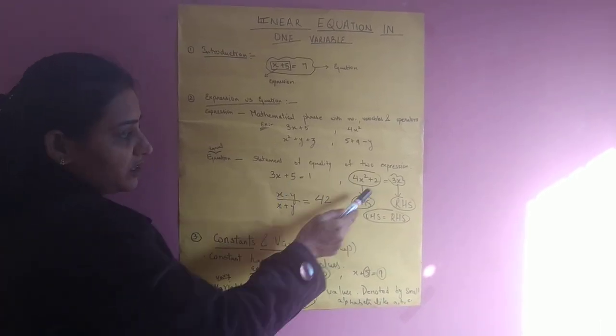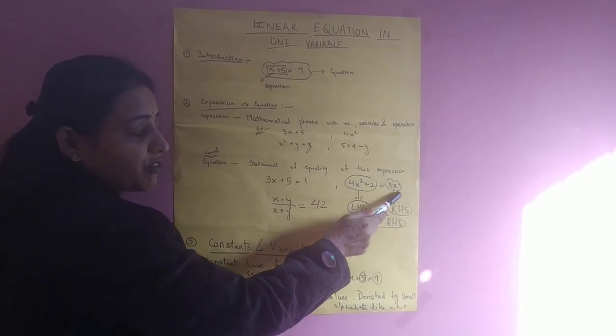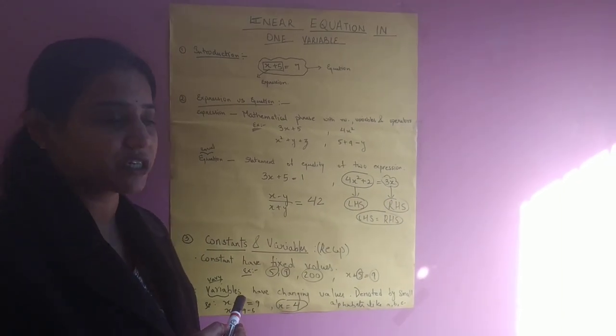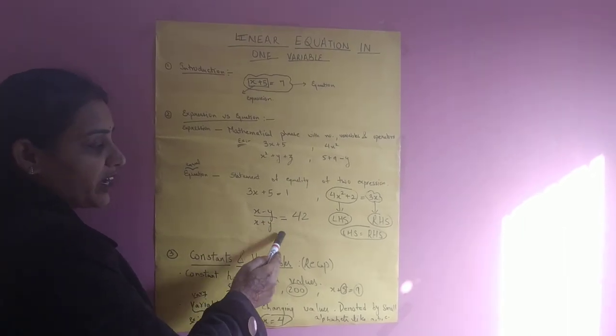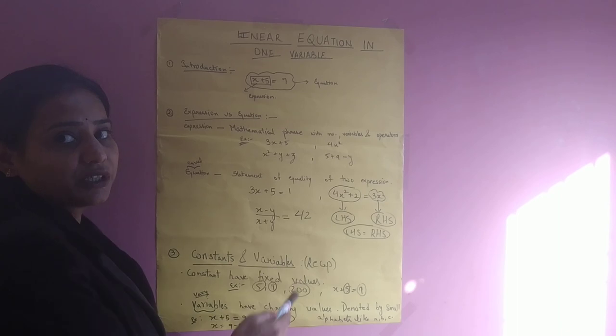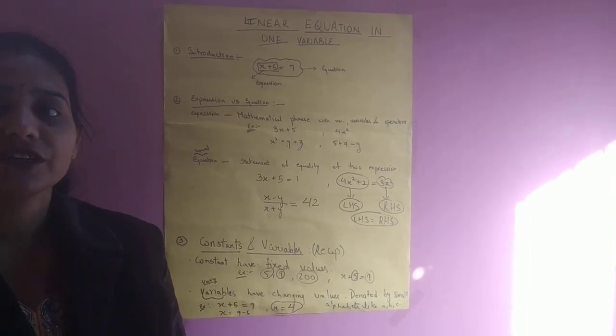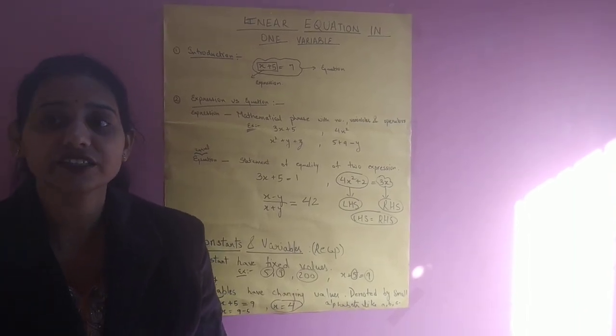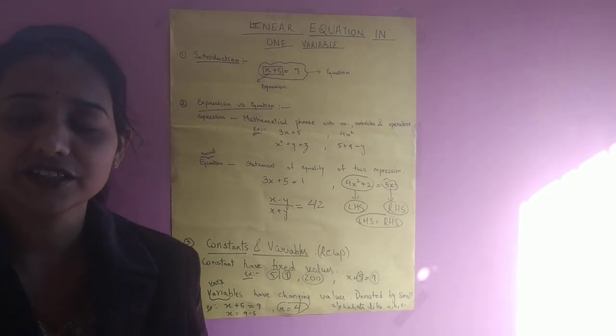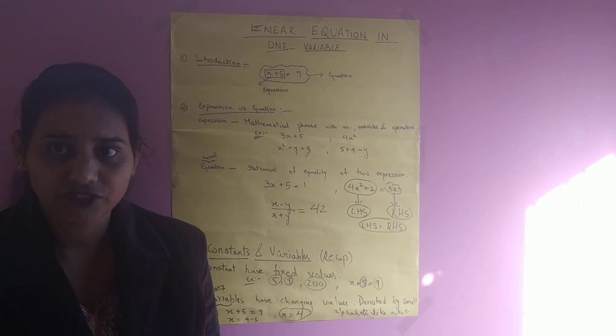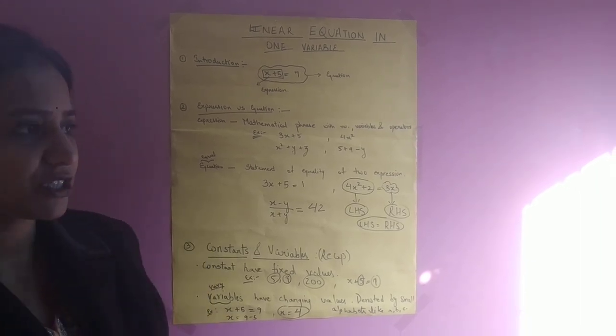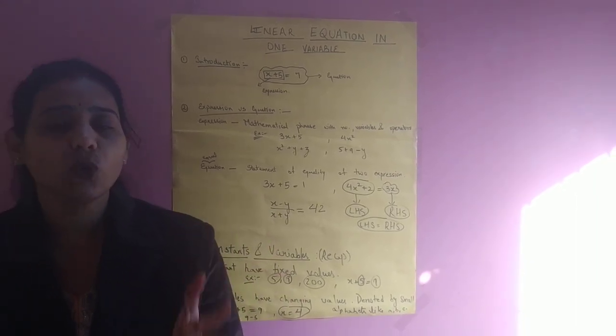Take an example here also: 3x plus 5 equals 1. This is known as the equation. 4x square plus 2 equals 3x. It is also known as the equation. It means there are different types, different forms of equations. We can make n number of equations while joining two expressions.